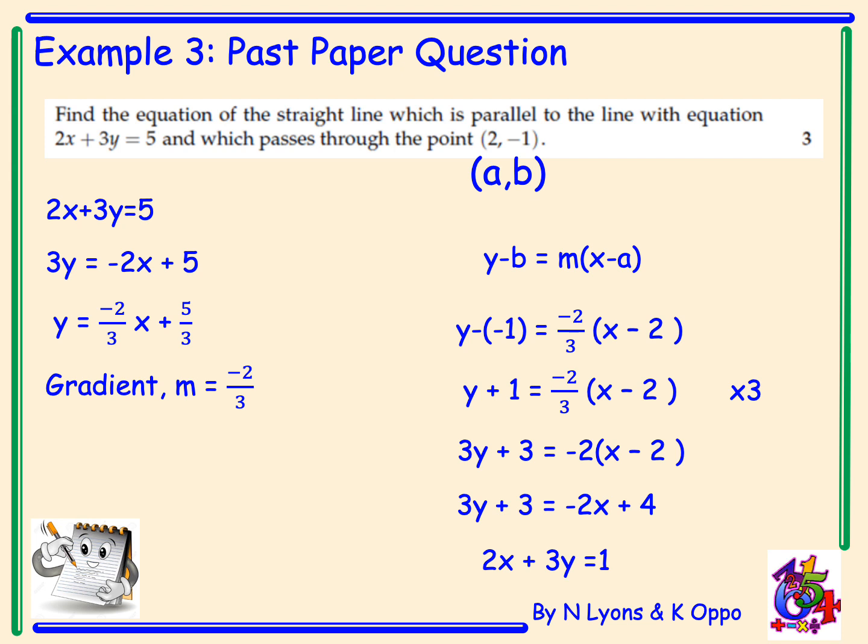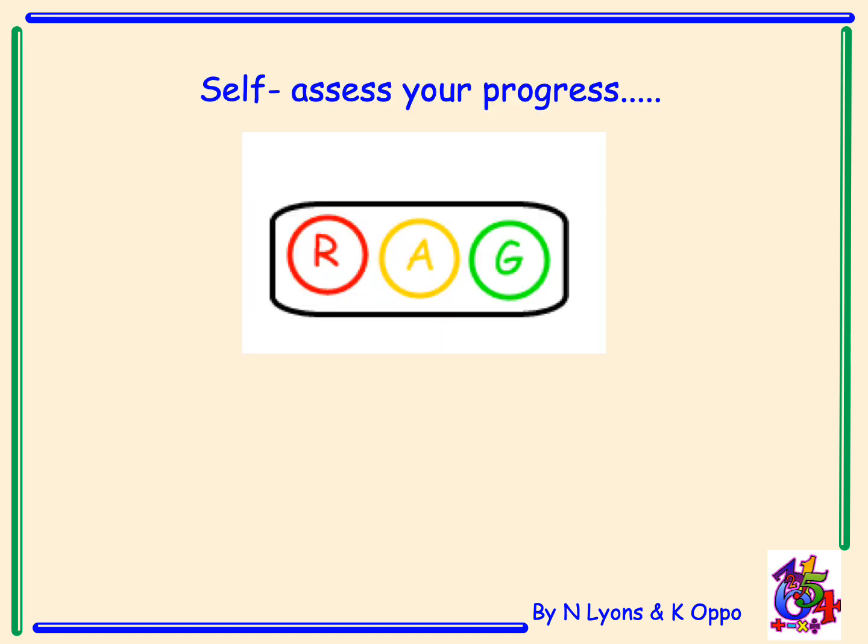To finish the lesson, self-assess your progress using your RAG status — are you red, amber or green? Tick under R if you're not sure or still having problems; identify whether the issue is working with negative numbers or rearranging equations. Amber if you're doing okay, green if you're coping well. If you have any problems, please see your teacher as soon as possible.